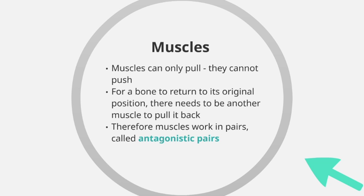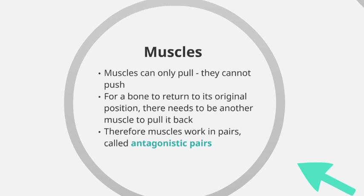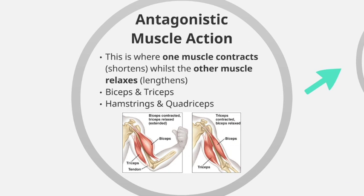For a bone to return to its original position there needs to be another muscle that moves in the opposite direction. So when our arm is pulled in one direction, another muscle has to work in the opposite direction to move it back. This means muscles work in pairs, and these pairs are called antagonistic pairs — a term you need to be familiar with.